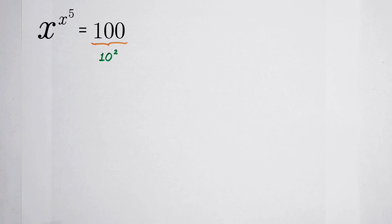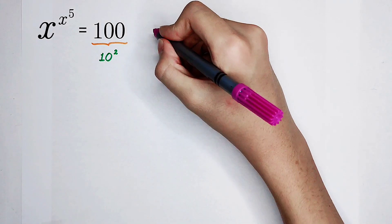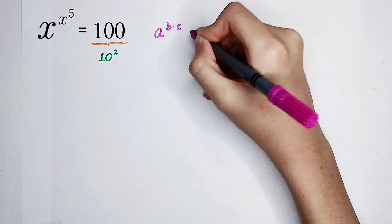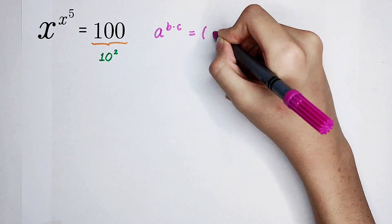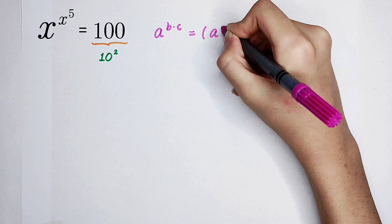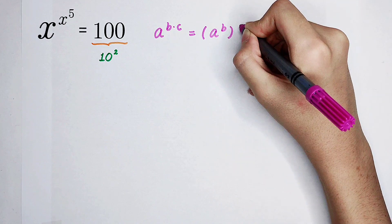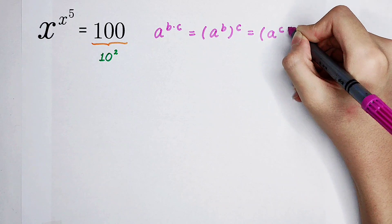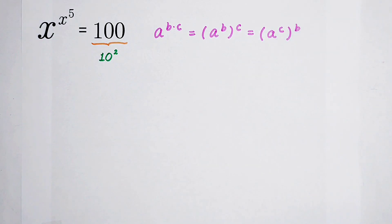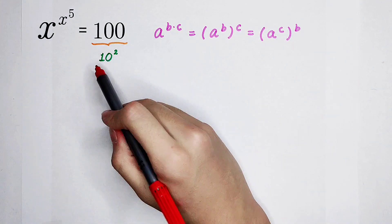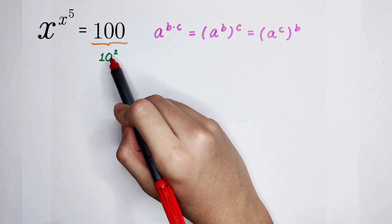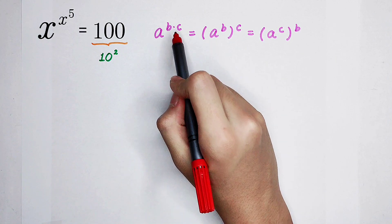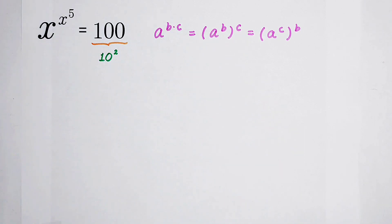For the next step, I have a formula. That is: a to the power of b, then times c, is equal to a to the power of b, all to the power of c. It is also equal to a to the power of c first, and then the exponent is b. Now, a is 10, b is 2, and we are going to find a number c — we can let c equal 5.